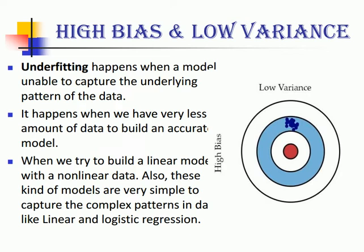The next situation is high bias and low variance. This situation is called underfitting, when a model is unable to capture the underlying pattern of the data. It happens when we have very little data to build an accurate model, or when we try to build a linear model with nonlinear data. These kinds of models are very simple and can't capture complex patterns — like linear or logistic regression.